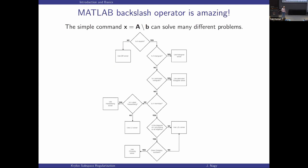I once asked how many lines of code are inside backslash. I was told the number was too big — probably a quarter million. I mean, think about it: if it's a sparse matrix, what is it doing there? There's a lot of stuff going on in there. You can pick a pretty big, dense matrix and get a solution very fast. It's kind of an amazing command.